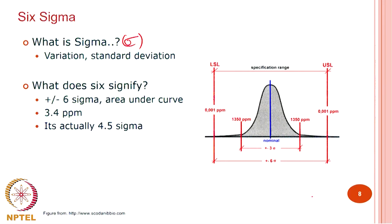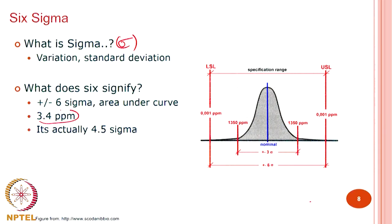Six sigma basically means plus or minus 6 sigma. One clarification to take away from this class: it is not plus or minus 3 sigma. Six sigma means it is plus or minus 6 sigma on each side — in total it is 12 sigma. As I pointed out in the beginning of class, what does it actually mean? It means 3.4 parts per million. If you are going to manufacture 1 million washers, about 3.4 of them are allowed to fail — that is the level of quality.